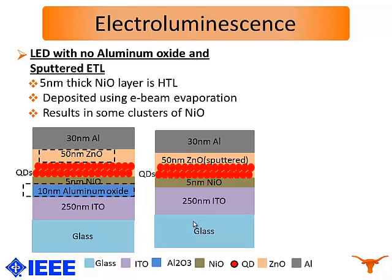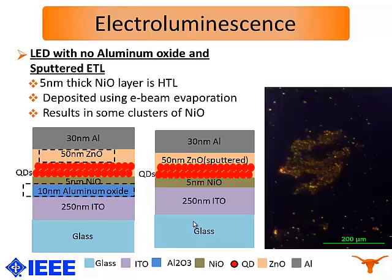Due to this, such kind of quantum dot LEDs can emit light for about three to four hours. As we can see in the figure, we find clusters where illumination occurs, and we do not get uniform illumination over the entire area.